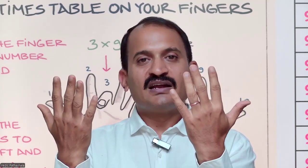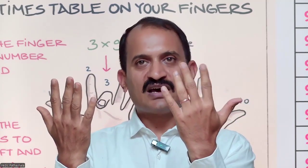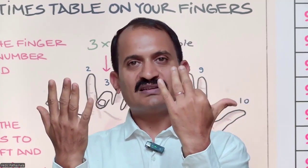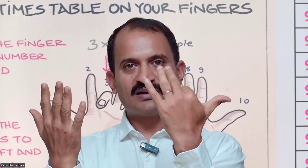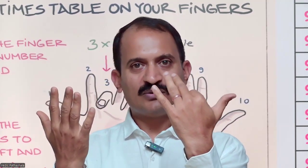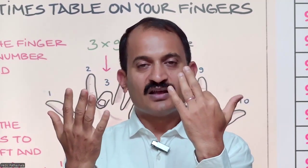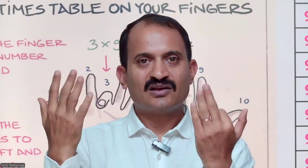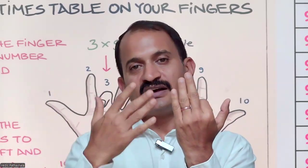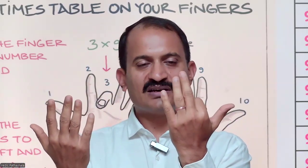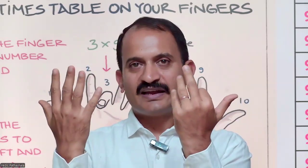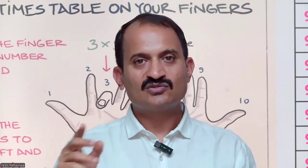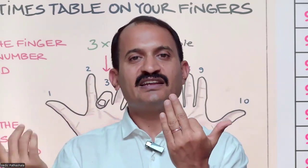For 9 twos, fold the second finger. How many fingers are there to the left of this folded finger? Only one — only one thumb. So at the tens place, you get 1. How many fingers are there to the right of the folded finger? 8. So the units place is 8. Therefore 9 twos are 18.